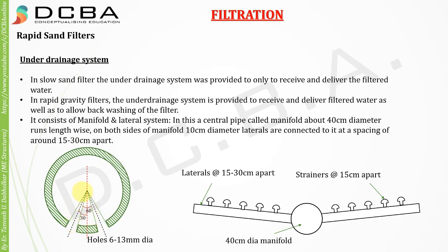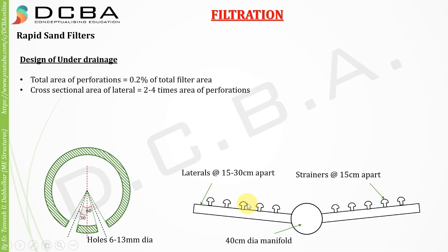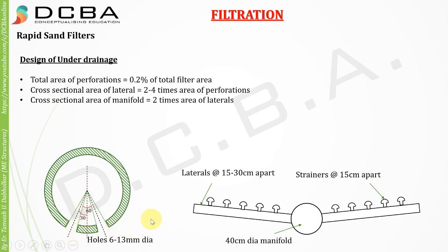The laterals have openings at some particular angle, with hole diameter of 6 to 13 mm. Another type uses strainers with small holes through which water enters the laterals. Either of these systems can be provided. The total area of perforations is equal to 0.2% of the total area of the filter.